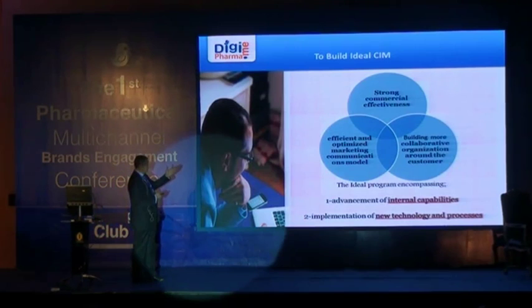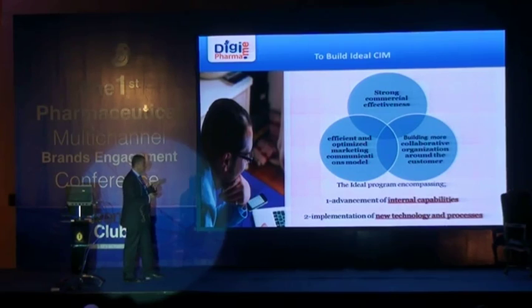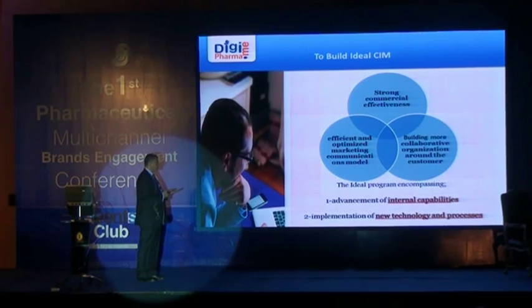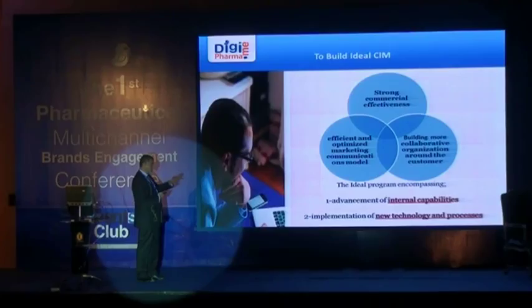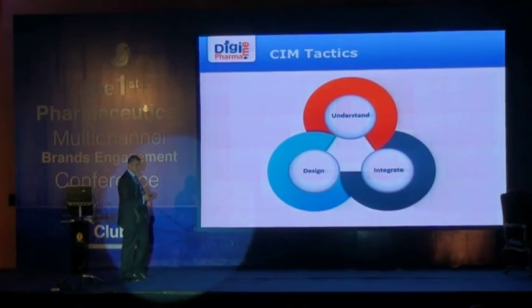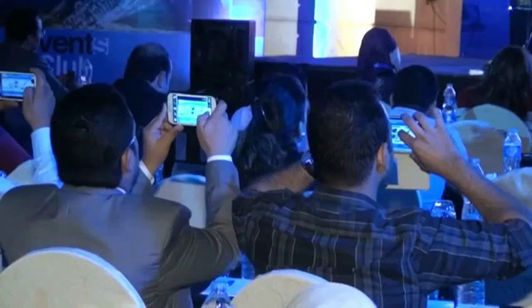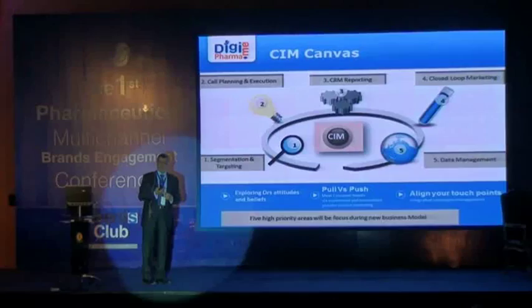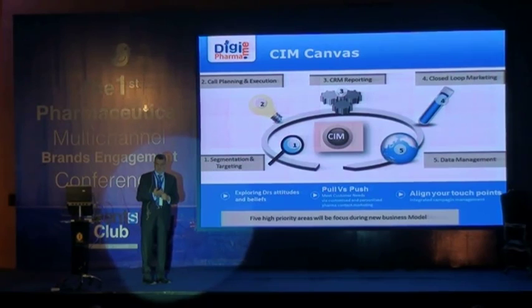In order to build a customer interaction management model, we need a strong commercial effectiveness and an efficient, optimized marketing communications model in our company, and to build a more collaborative organization around the customer — a customer-centric organization with aligned intentions. So how do we go for tactics? How do we build customer interaction management? There are five steps to build it in a healthy, consistent way to avoid customer confusion.